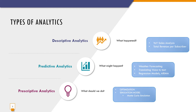Moving on to the types of analytics, there are three types. First is descriptive analytics. Descriptive analytics is the interpretation of historical data to better understand changes that have occurred in a business. It describes the use of a range of historic data to draw comparisons such as year-on-year sales, month-on-month sales, total revenue per subscriber, and so forth.